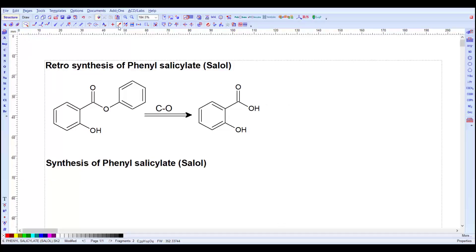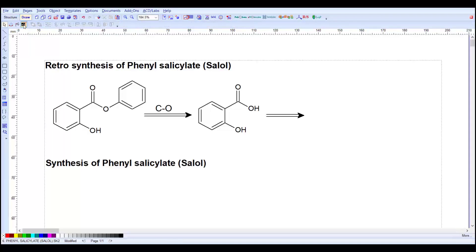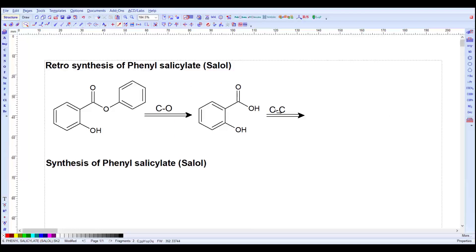After that we need to add an arrow to show the C-C bond disconnection. For the C-C bond disconnection here we add this arrow and write on top of the arrow C-C bond. So here we can see there is a C-O bond disconnection, the C-C bond disconnection, and that's it for this one.